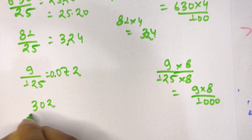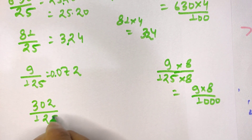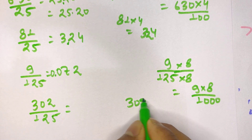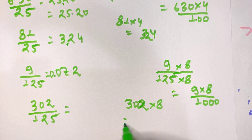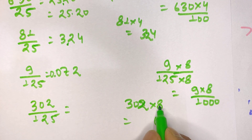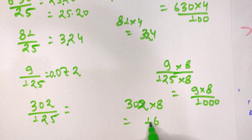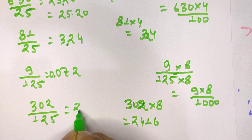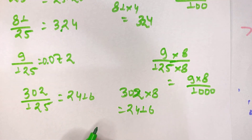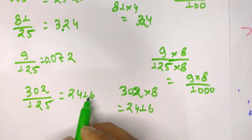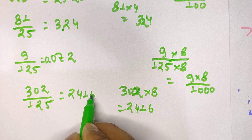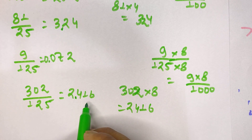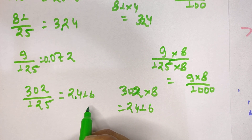Next question: 302 divided by 125. We multiply 302 by 8: 2 times 8 is 16 (write 6, carry 1), 0 times 8 is 0 plus 1 is 1, 3 times 8 is 24, giving us 2416. We place a decimal point after three digits from the last, so the answer is 2.416. Hope you understood clearly — if you have any doubts, let me know in the comment section. Thank you.